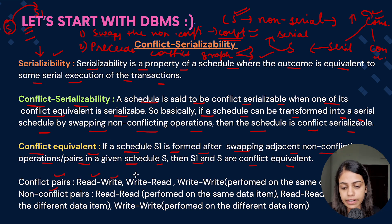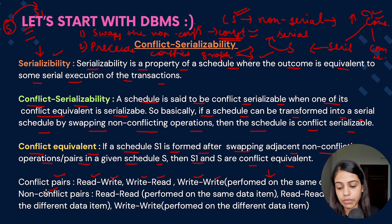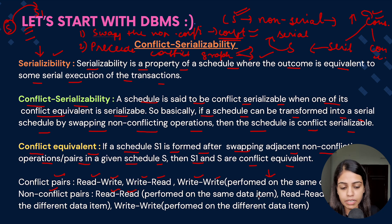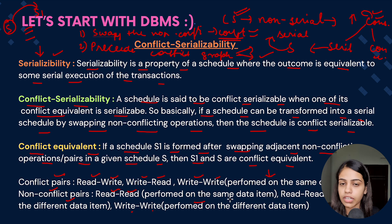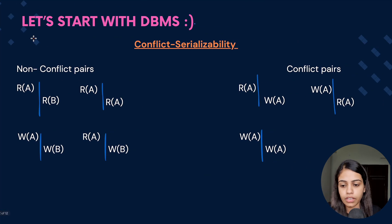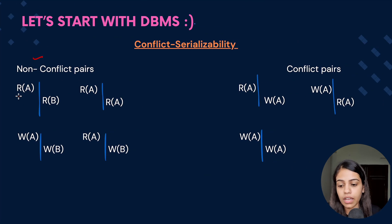What are conflict and non-conflict pairs? Conflict pairs are read-write, write-read, and write-write when performed on the same data item. Non-conflict pairs are read-read when performed on the same data item, read-read when performed on different data items, and write-write when performed on different data items.